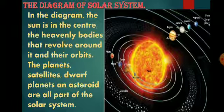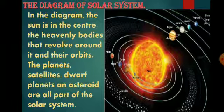This diagram is given in your textbook and you have to practice it by drawing it in your notebook. You have to remember the sequence of the eight planets.